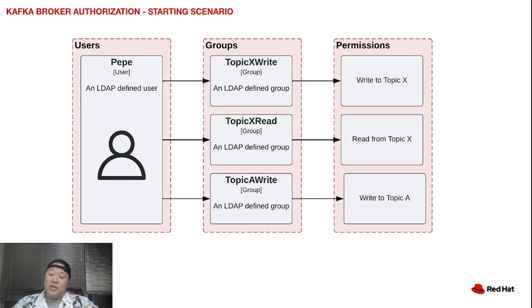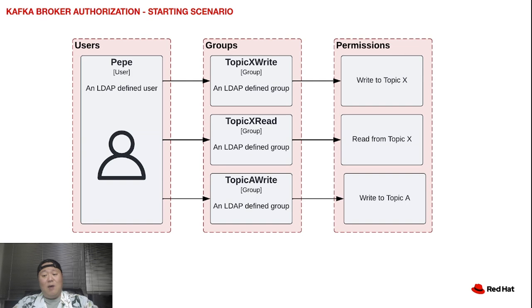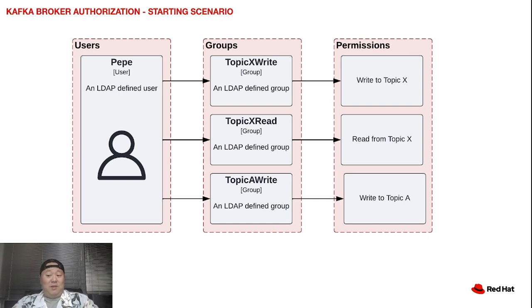Given the explanation behind the deployment layout and architecture, what exactly is the purpose of this demonstration? I'll give it to you in the form of a problem statement. As a Kafka administrator, I want to manage user and group permissions to publish and consume messages from specific topics by adding them to an AD LDAP group. Let's take a look at the starting point for a specific user — we'll call this user Peppy.